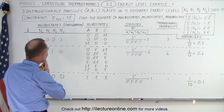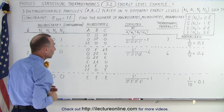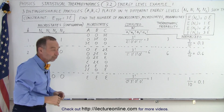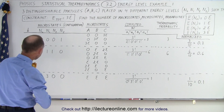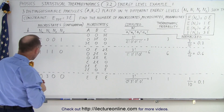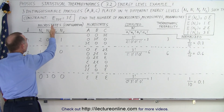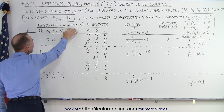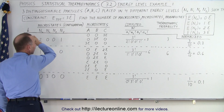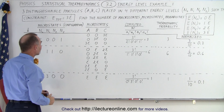So what are the different number of macrostates and microstates that we can have? The number of macrostates really depends upon the configurations of how the electrons are divided among the energy levels.